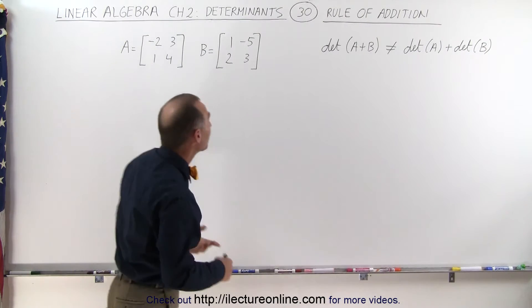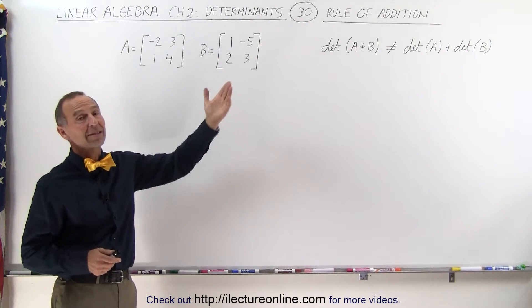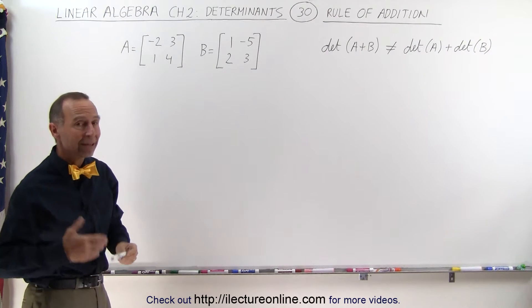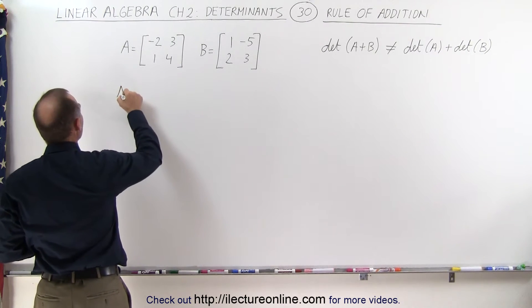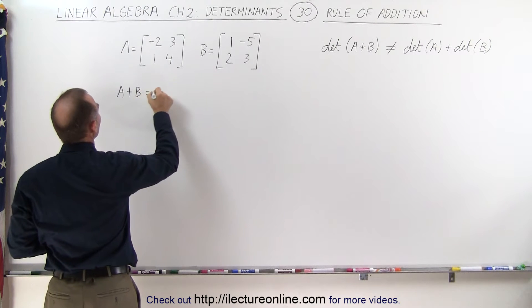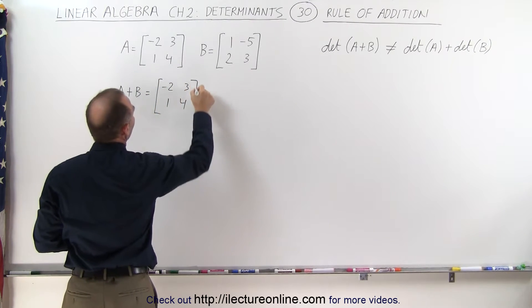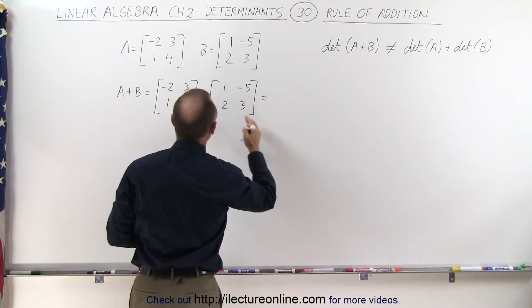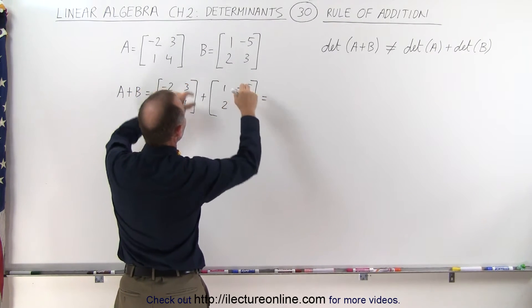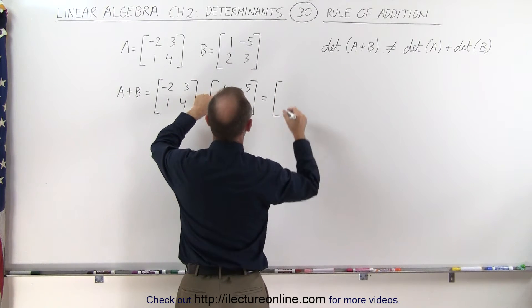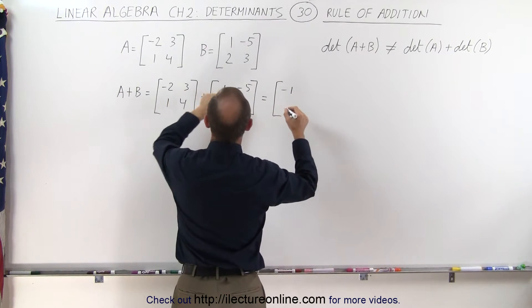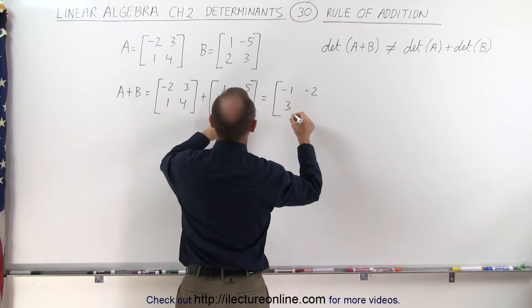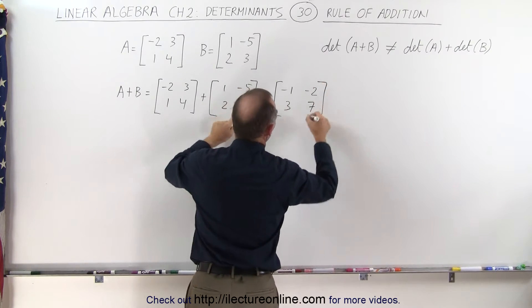Here we have two 2 by 2 matrices, A and B, and we are going to illustrate that those are indeed not equal to one another. First, let's add the two matrices: A plus B equals the first matrix with entries minus 2 and 1 (top row) and 3 and 4 (bottom row), added to the second matrix with entries 1 and minus 5 (top row) and 2 and 3 (bottom row). We simply add the corresponding elements: minus 2 plus 1 is minus 1, 3 plus minus 5 is minus 2, 1 plus 2 is 3, and 4 plus 3 is 7. This is the sum of the two matrices.